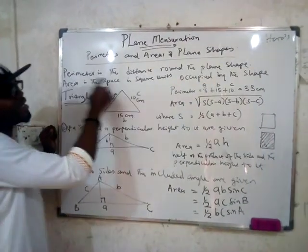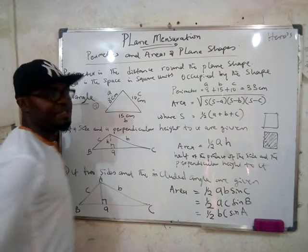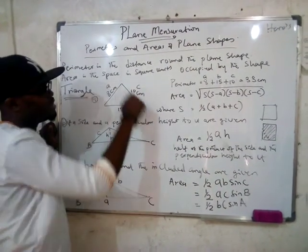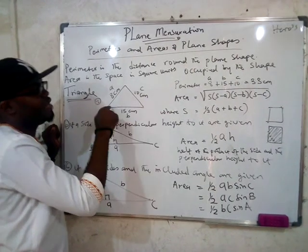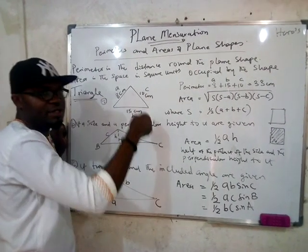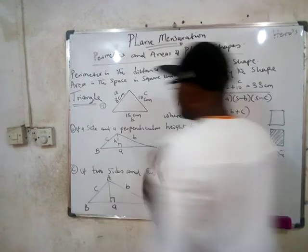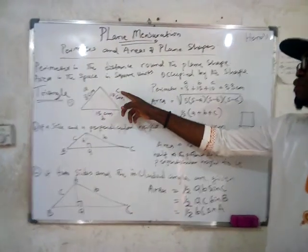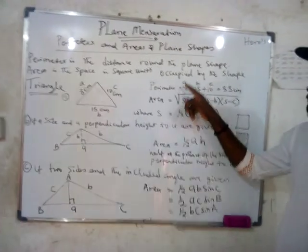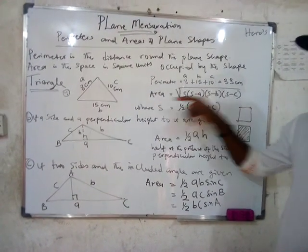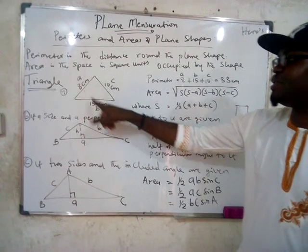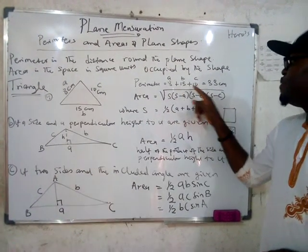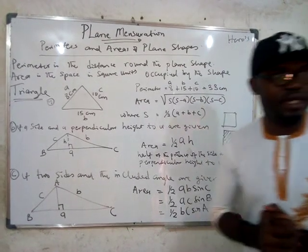Perimeter is the distance around a plane shape. Are you seeing this plane shape? What is the distance around it? This side plus this side plus this side. So if you're told to calculate the perimeter of this triangle, it's simply a plus b plus c. If we are given the values of a, b, and c as 8, 10, and 15, we have 8 plus 15 plus 10, giving us 33.